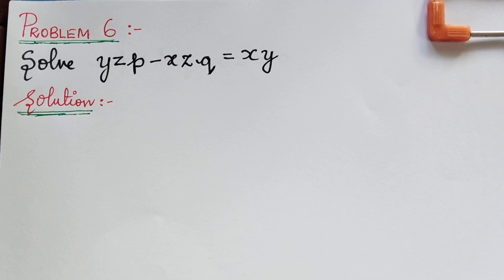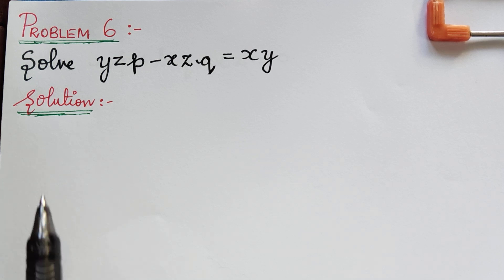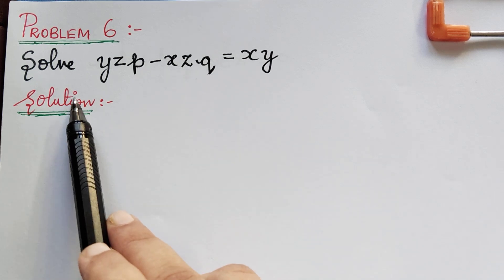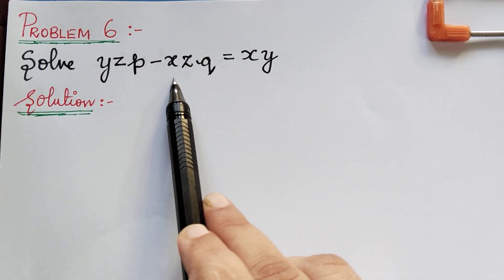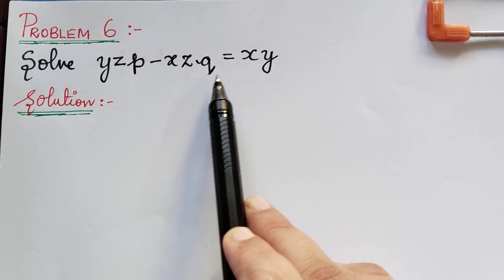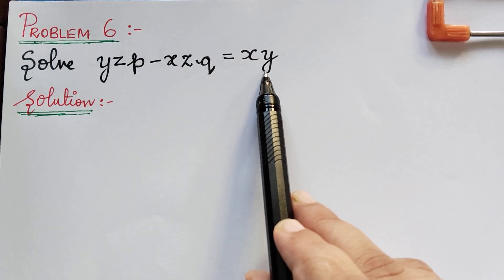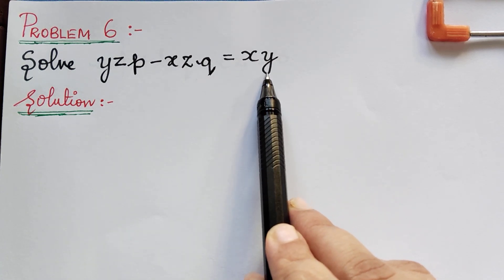Hello students. Under the topic Lagrange's partial differential equation, here we have problem 6. The question is: solve yzp minus xzq is equal to xy.